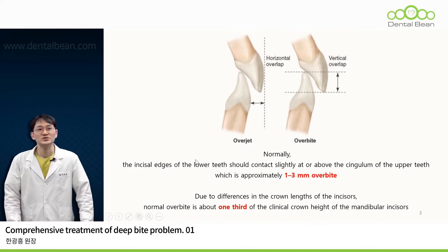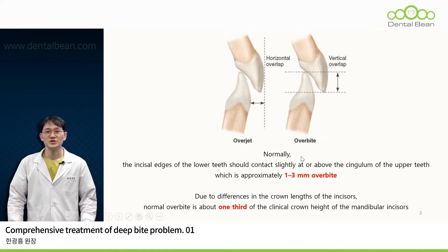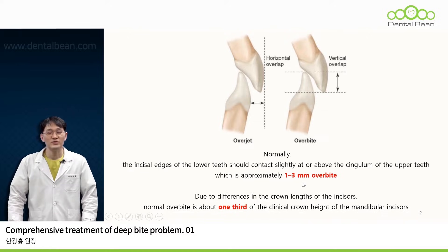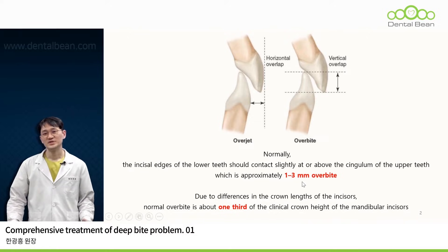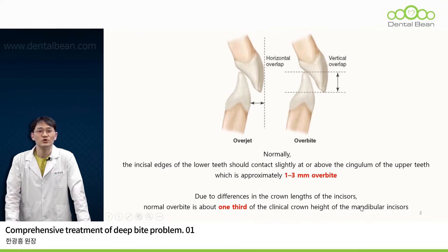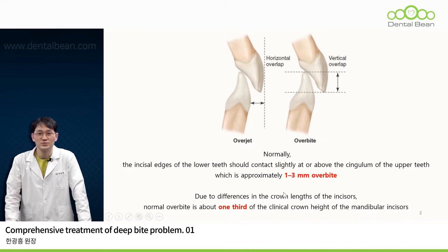Normally, the incisal edge of the mandibular incisors occludes with the cingulum of the maxillary incisors. When about one to three millimeters of the clinical crown length of the mandibular incisors is covered by the maxillary incisors, we call that a normal overbite. However, as the size of teeth varies from person to person, we typically categorize it as a normal overbite if approximately one-third of the mandibular incisors' clinical crown length is obscured.